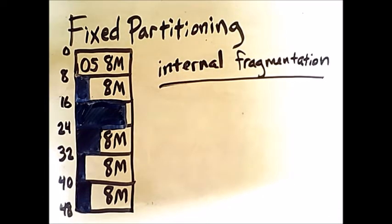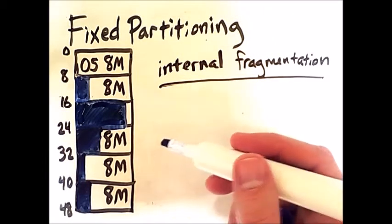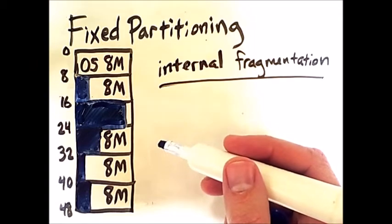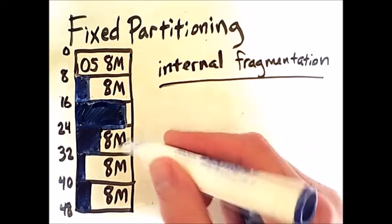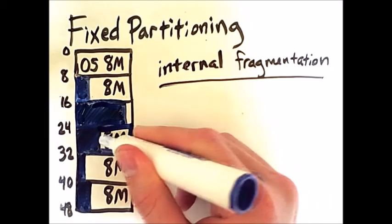Now, if we wanted to load a process that was too big for one of our partitions, we could technically do it if we had some very clever programming that recognized that we had one partition that was fully occupied by the first part of our process